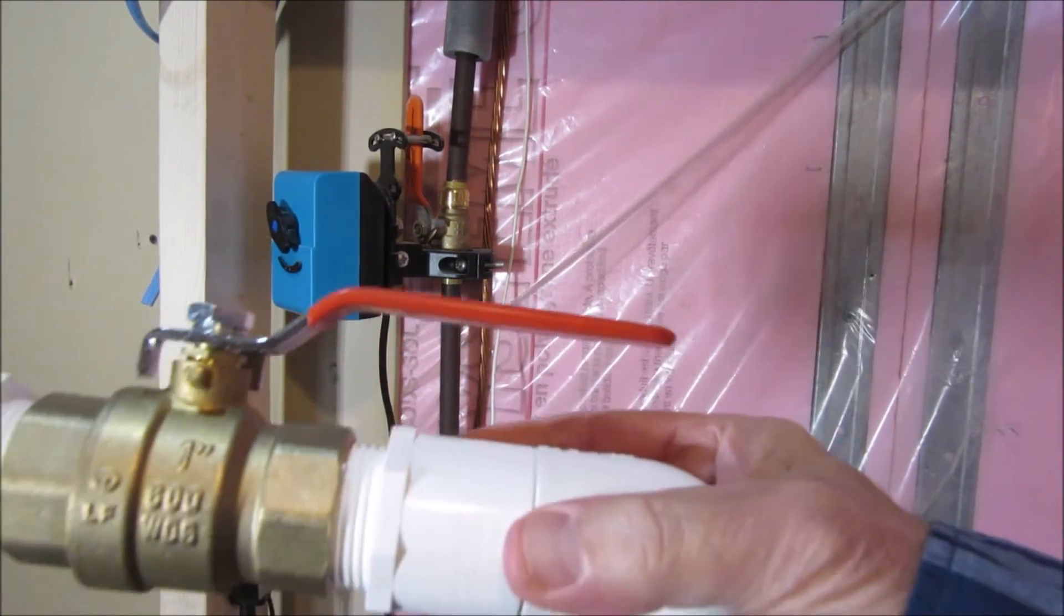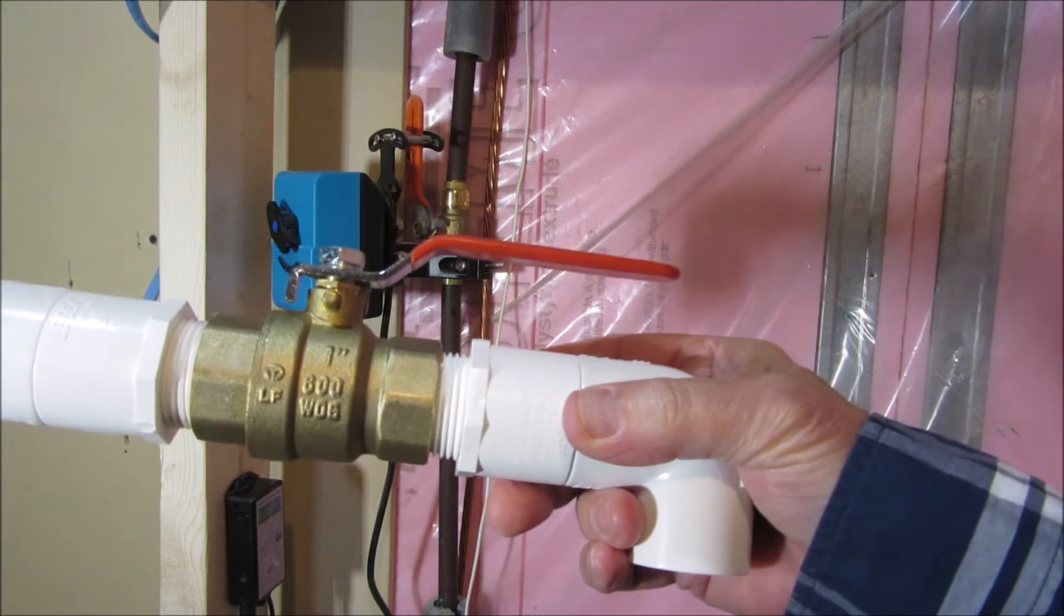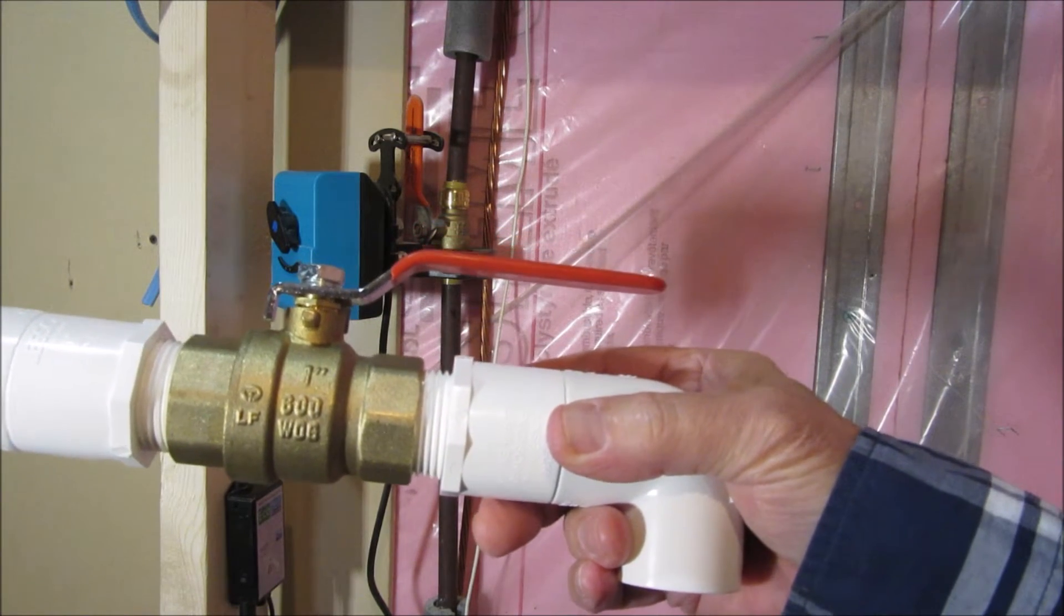You can tell the valve size by just looking for the stamp on the side of it. It's usually on the side of the valve. This is a 1-inch valve.